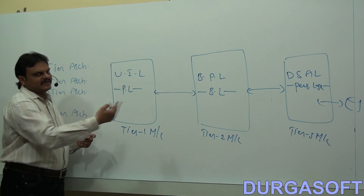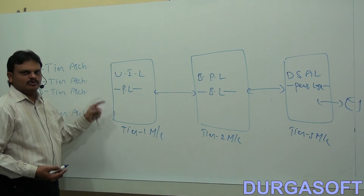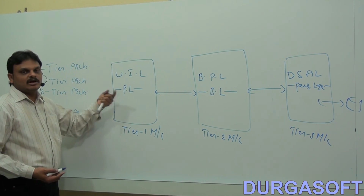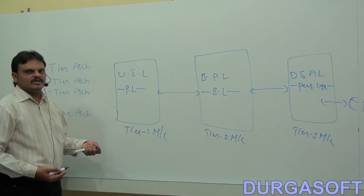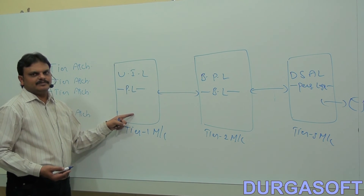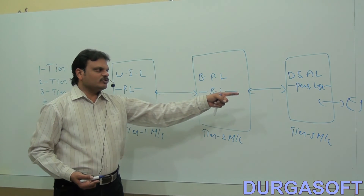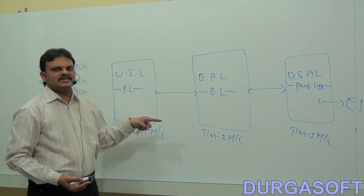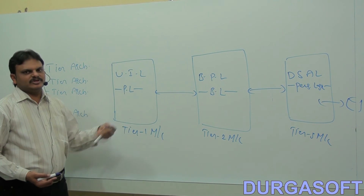If you observe three-tier architecture, when compared with one-tier architecture and two-tier architecture, three-tier architecture is able to provide more loosely coupled design. How can we say it is more loosely coupled? Here, the user interface layer is separated, business processing layer is separated, and data storage and access layer is separated. All three system logic layers are available at three different layers of machines.